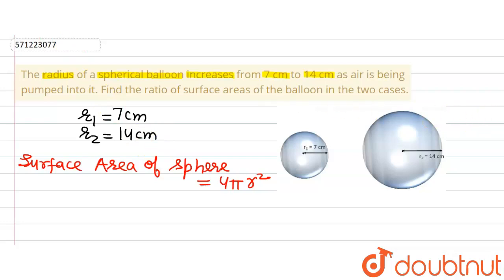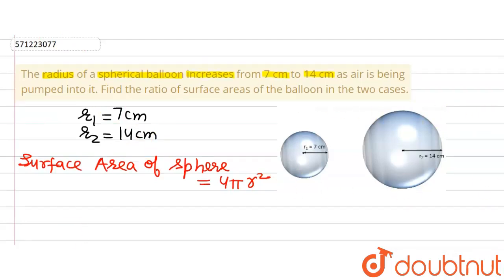Now we are supposed to find out the ratio in this question. The ratio of surface areas will be equal to, this is what we are asked in the question, the ratio of their surface areas.